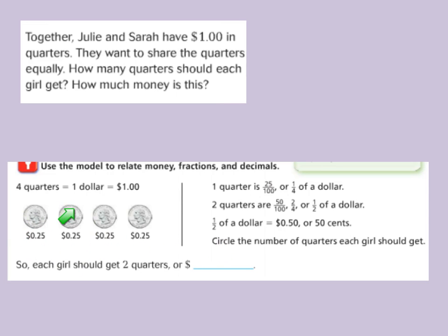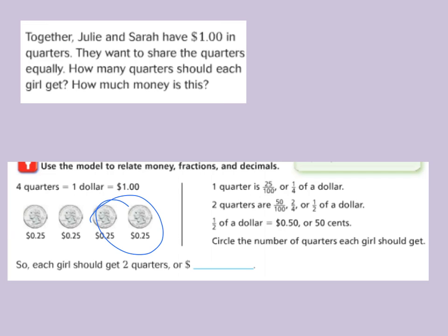Now if I have two quarters, twenty-five plus twenty-five is equivalent to fifty. So that's fifty out of one hundred cents, or two-fourths, or half of a dollar, because two out of four is one-half of a dollar. A half of a dollar is equivalent to fifty cents, so each girl should receive two quarters — each girl gets two quarters or fifty cents.